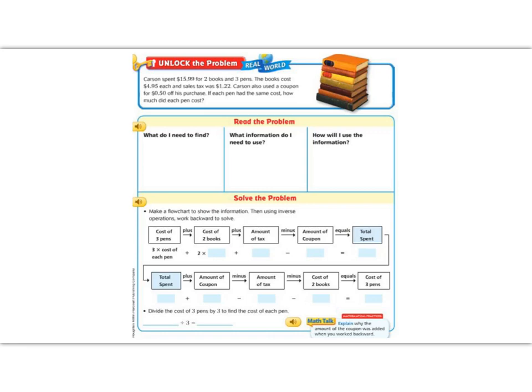Let's start underlining some numbers that will help us fill out what we need to find and how we're going to use that information. So if we look at the bottom of our question, we need to know how much does each pen cost? So let's write that in what we need to find. We need to find how much each pen cost.